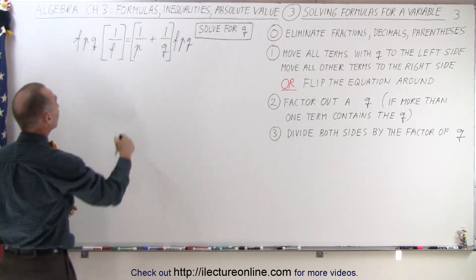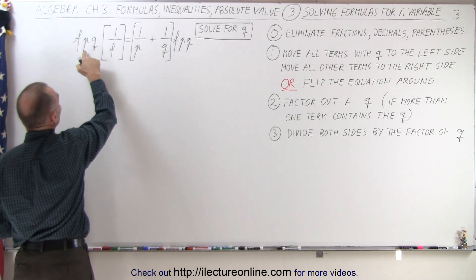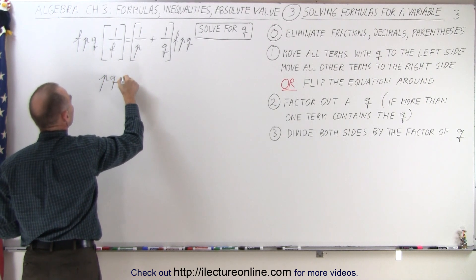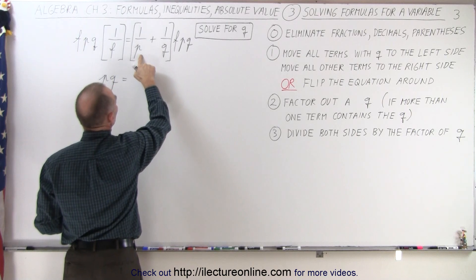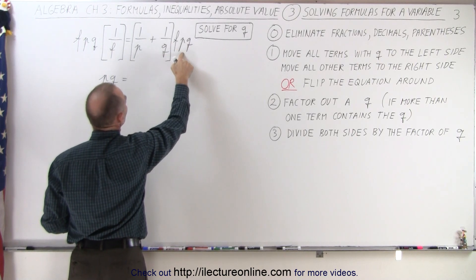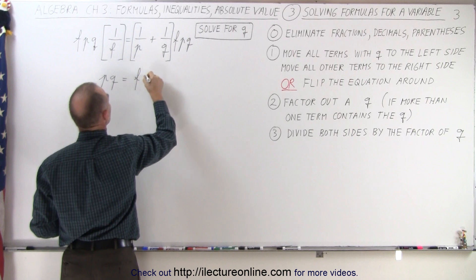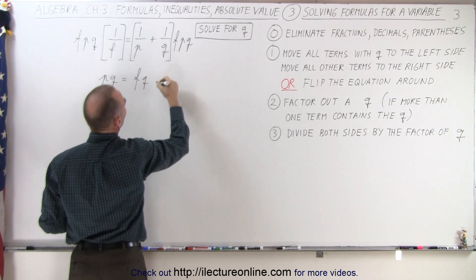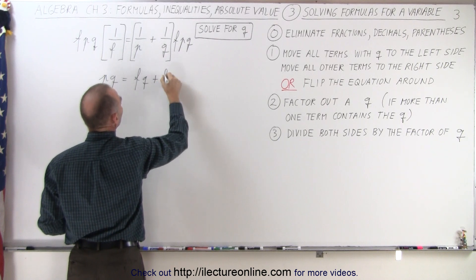On the left side, notice that the F will cancel out the F, and we're left with a P times Q. And on the last term here, notice that the Q's will cancel out, and we end up with an F times P.